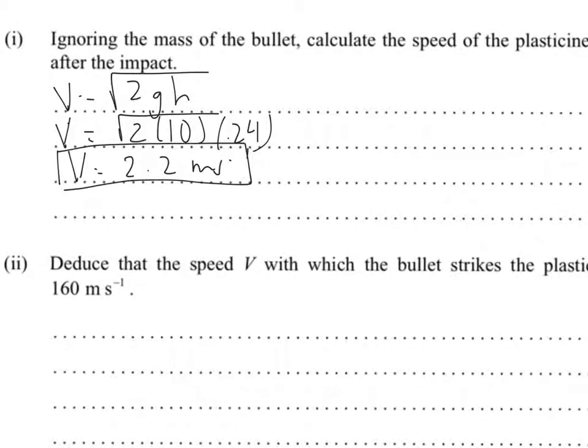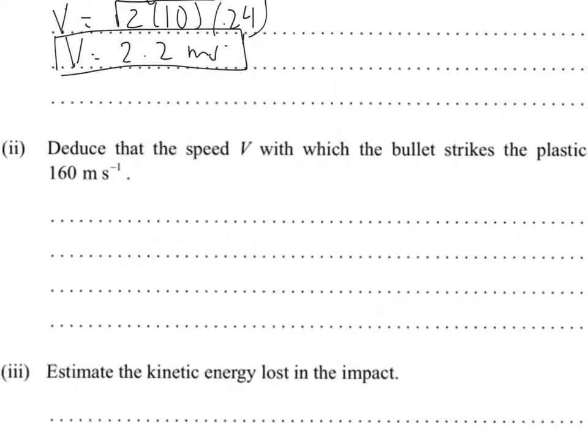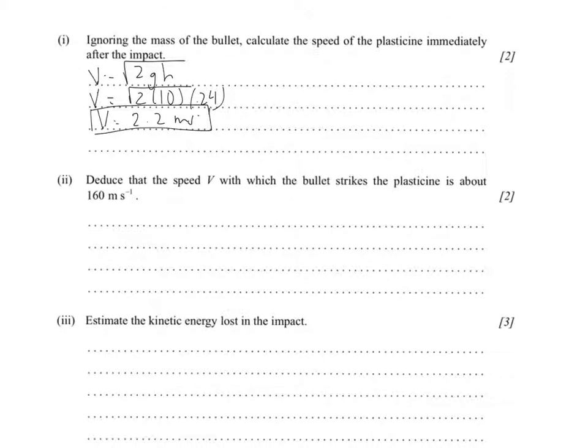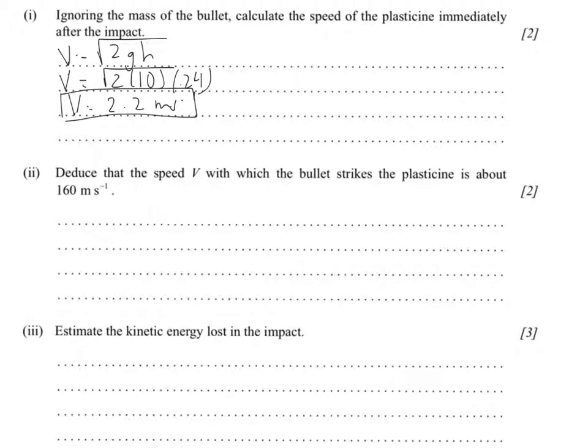The next problem says to deduce that the speed V with which the bullet strikes the plasticine is about 160 meters per second. So for this one, due to the conservation of momentum, MV before is going to be equal to MV after. So MV equals MV.